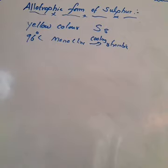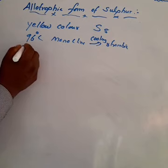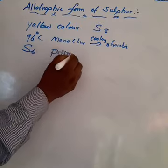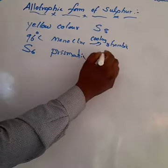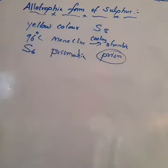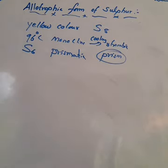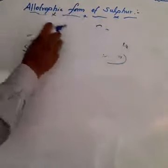Monoclinic sulfur also contains S8 molecules along with a small amount of S6 molecules. It is also called prismatic sulfur because it exists as long needle-like prisms. It is stable between 96°C and 119°C and slowly changes back to rhombic sulfur.